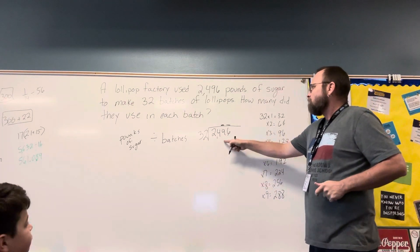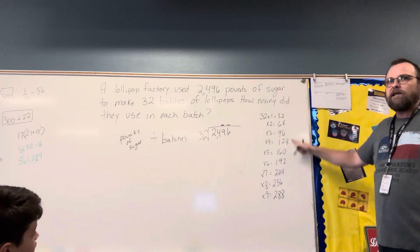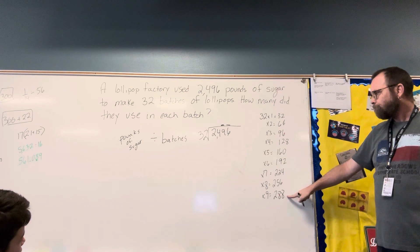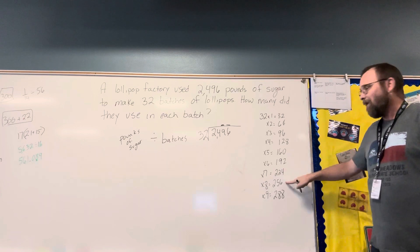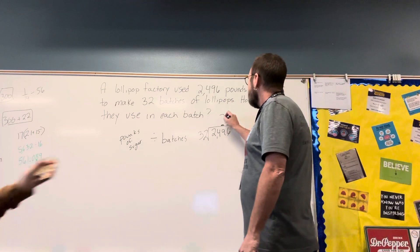Ethan, how many times does it go into 249? I want to get as close to 249 as I can without going over. Nine is too big, that would be 288. Seven is correct. Eight is too big because 256.